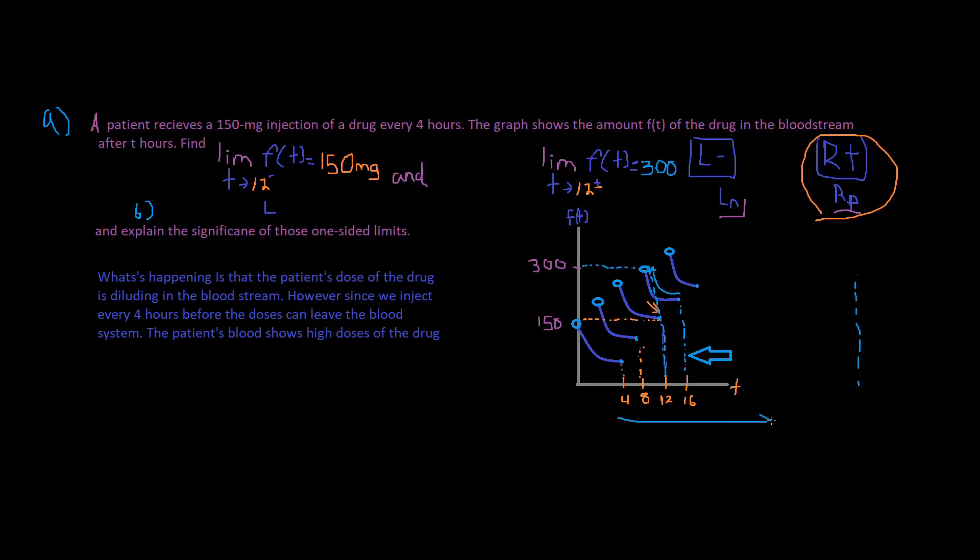So if we were to take a look at our graph right here, if we were to let this person's drug dilute and go all the way down, then it will approach zero. But we're giving this patient drugs every four hours. Therefore, their drug intake is going increasing up. And so that's a pretty bad indication because you could overdose if you take too much of whatever drug you're taking.